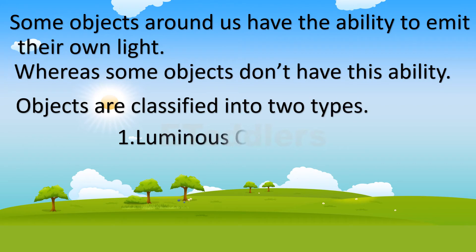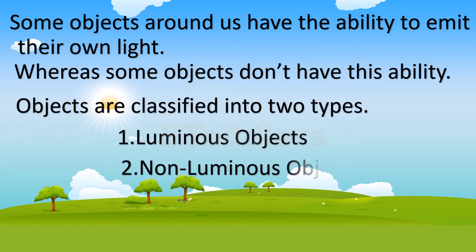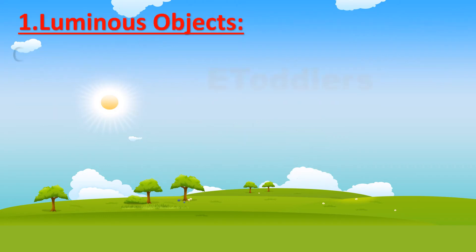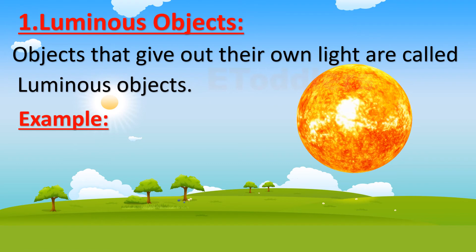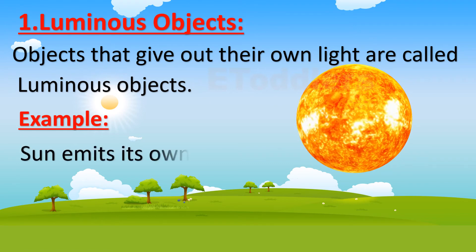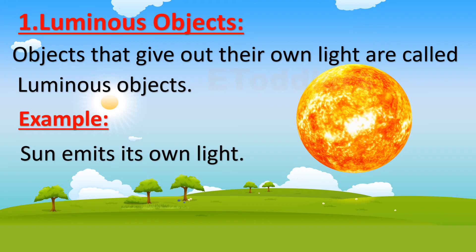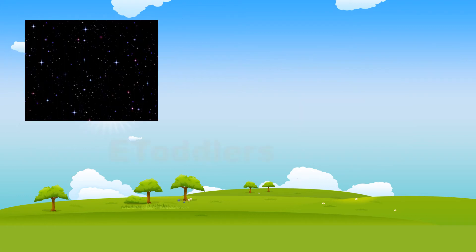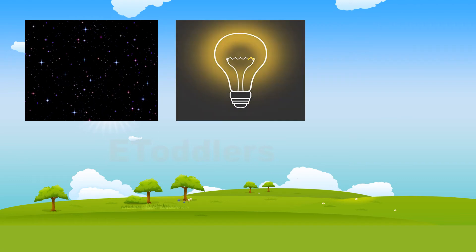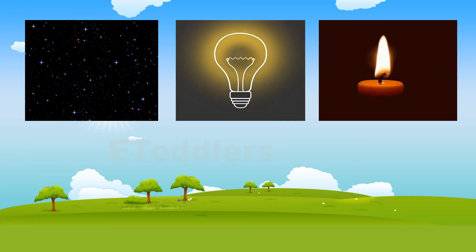Luminous objects and non-luminous objects. Objects that give out their own light are called luminous objects. For example, the Sun emits its own light. There are many examples of luminous objects in the universe. Other examples are stars, electric bulb, and candle.